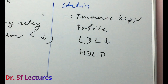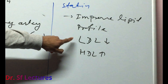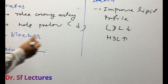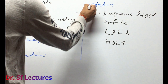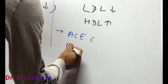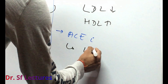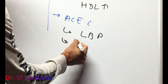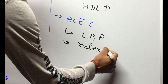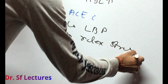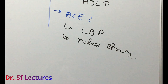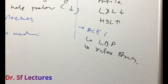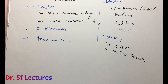In the lipid profile, LDL will decrease and HDL will increase. LDL is bad for health and HDL is good for health. We can also use ACE inhibitors for lowering blood pressure and relaxing stress in the heart.